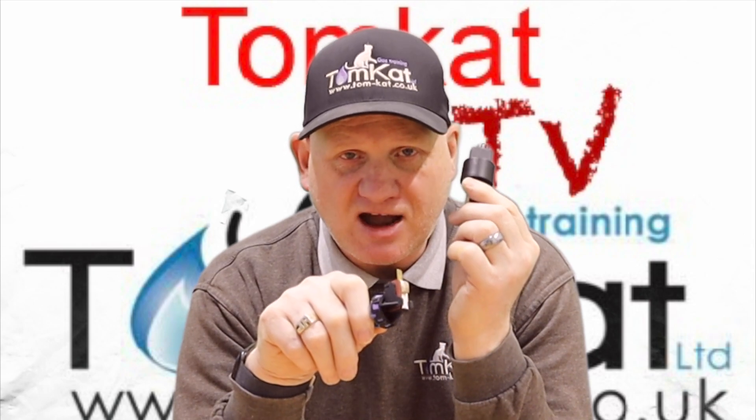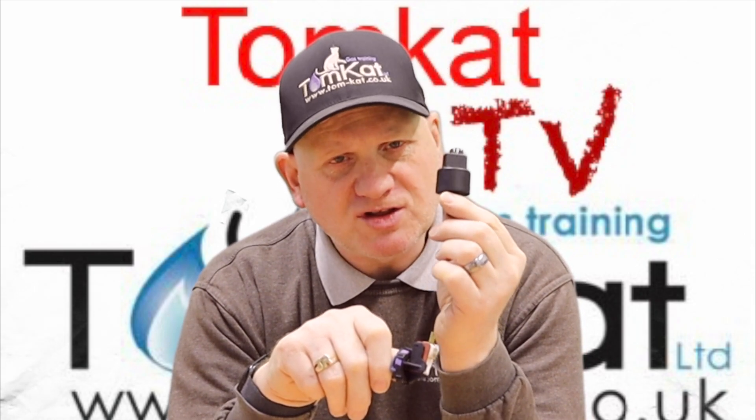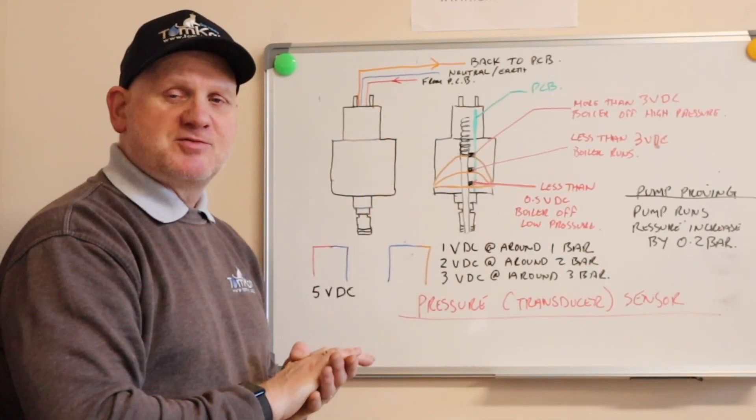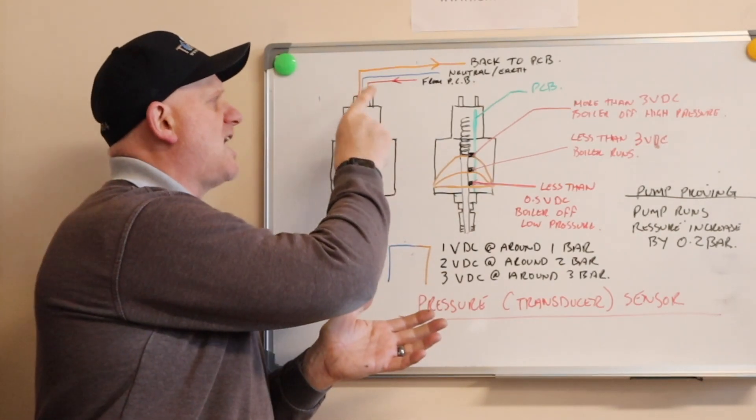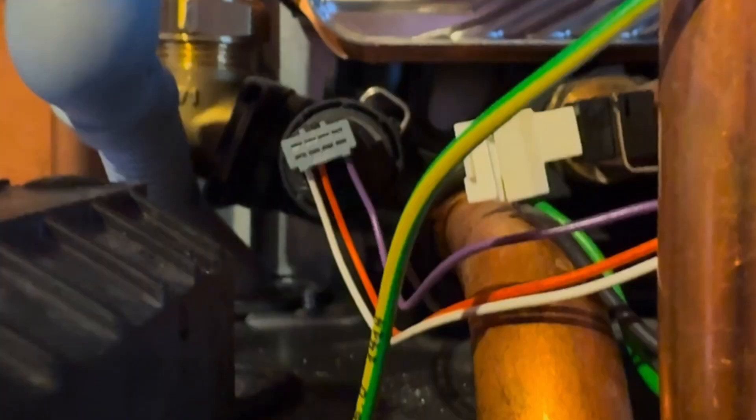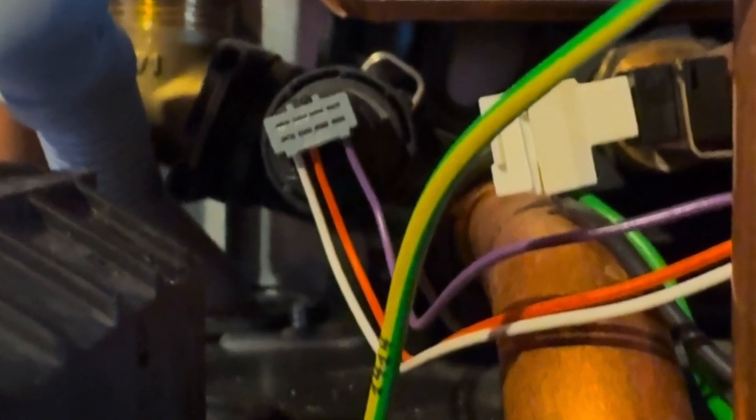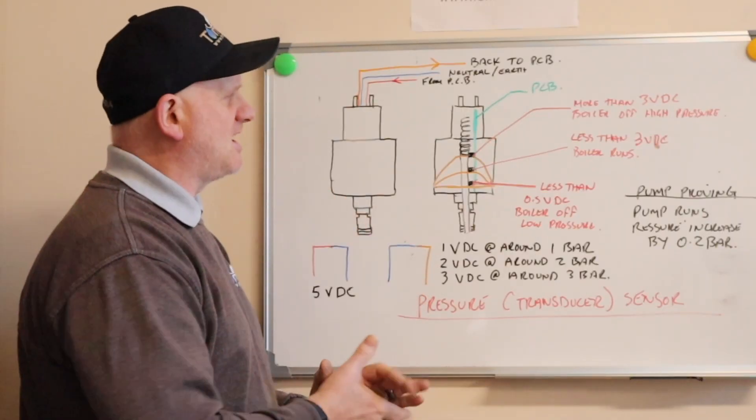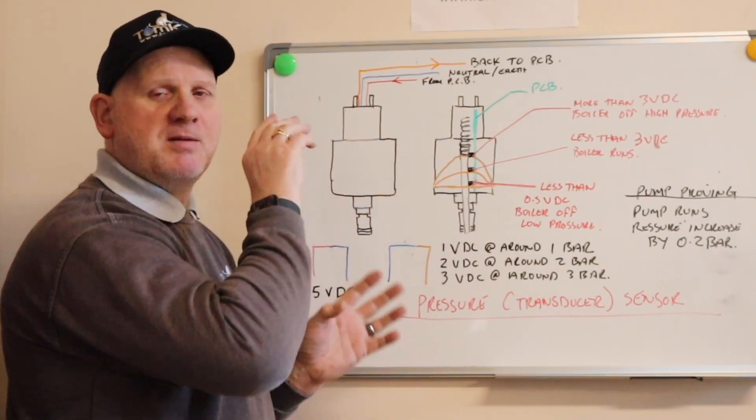Let's get on with it and find out first how the low water pressure transducer sensor works. As you can see, there are three wires coming off this transducer. I've just called them red, blue, and orange. They can be any color. The colors on this Glow-worm are white, orange, and purple.